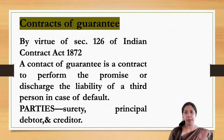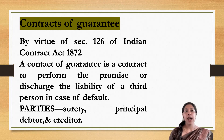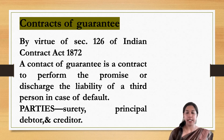Contract of Guarantee involves mainly three parties: principal debtor, creditor, and surety. The principal debtor is the person who borrows money from the creditor. The creditor is the person who gives money to the principal debtor. The surety is the person who gives assurance to the creditor that if the principal debtor makes a default and doesn't make the payment, the surety will make the payment.